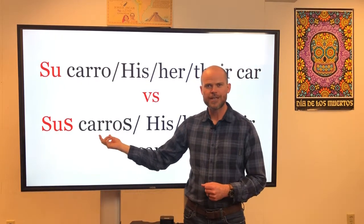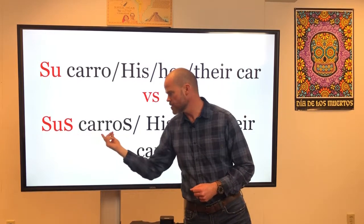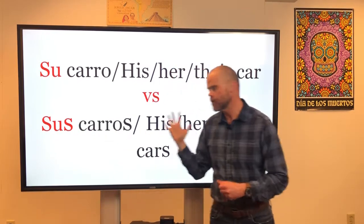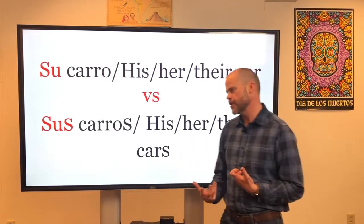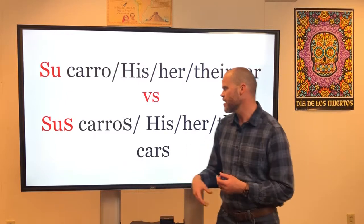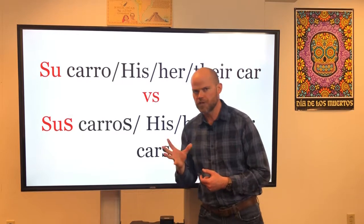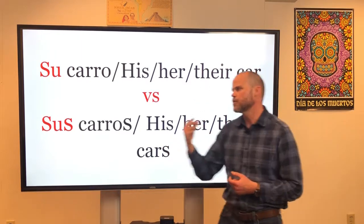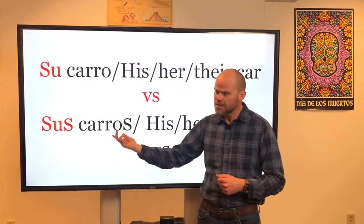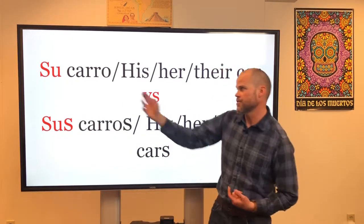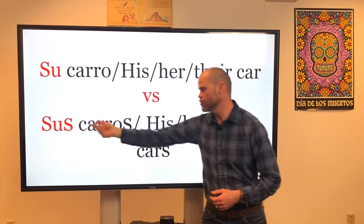It's sus carros because carros is plural. A very common mistake that beginners make is when they want to say "their car," they write sus carro because they see "their" and automatically want to use that form. But the only time you use sus is when the thing being possessed is plural. So "their car" is actually su carro. If you want to say "their cars," then it would be sus carros.